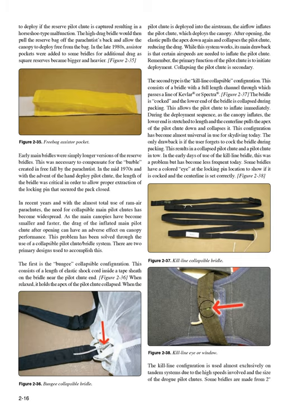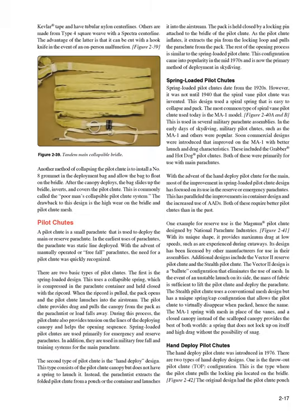The kill line configuration is used almost exclusively on tandem systems due to the high speeds and size of the drogue pilot chutes. Some bridles are made from 2-inch Kevlar tape with tubular nylon center lines; others are made from type 4 square weave with a Spectra center line, which has the advantage of being cuttable with a hook knife in the event of an on-person malfunction. Another method of collapsing the pilot chute is to install a no. 8 grommet in the deployment bag and allow the bag to float on the bridle. After the canopy deploys, the bag slides up the bridle, inverts, and covers the pilot chute—commonly called the poor man's collapsible pilot chute system. The drawback is high wear on the bridle and pilot chute mesh.